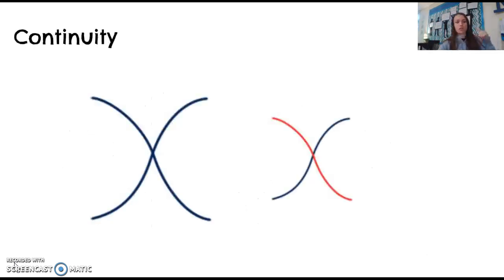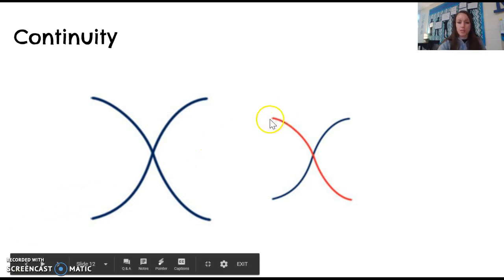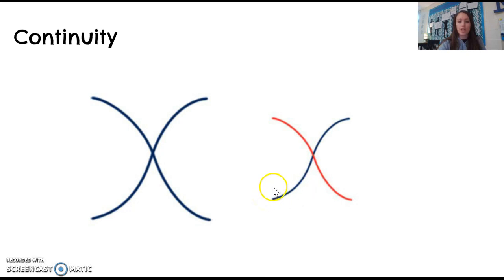Then there's continuity. Continuity says that our mind, when we see lines, wants to see continuous lines that flow rather than jagged lines. When you see the image on the left, you probably see two lines that intersect in the middle—one line that goes this way and one line that goes that way—rather than two Vs, just because your mind wants to see it as a line, as a continuous flow.